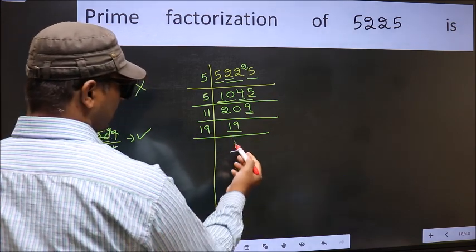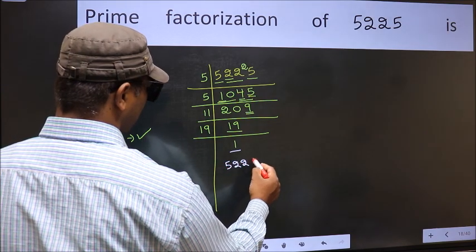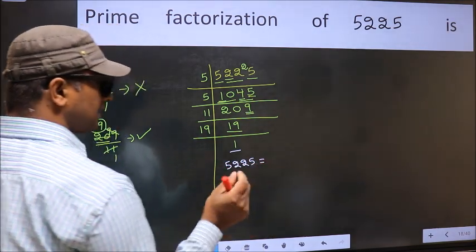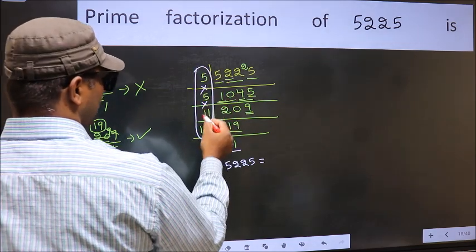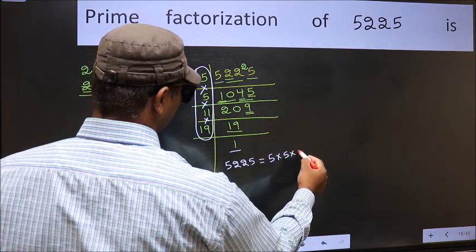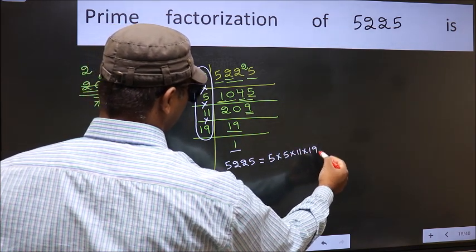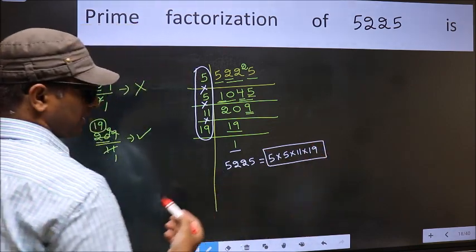We got 1 here. So the prime factorization of 5225 is the product of these numbers. That is 5 into 5 into 11 into 19. This is the prime factorization of 5225.